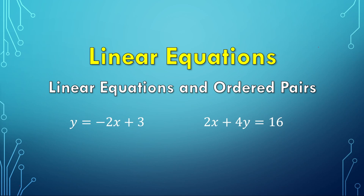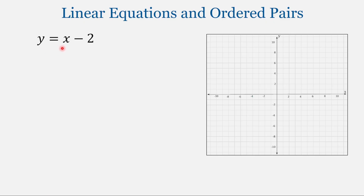Today we are going to look at ordered pairs and how to get ordered pairs from a linear equation. Here is a linear equation. As we looked at previously, the two variables in the equation are both raised to the power of 1 — y to the first power and x to the first power. But when you raise things to the first power, you do not need to show the 1. When placed on a graph, the x, y pairs that satisfy this equation will produce a line. That's why it's called a linear equation — you can even see the word 'line' within 'linear.' So let's see if we can find some points.